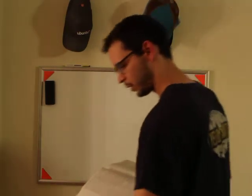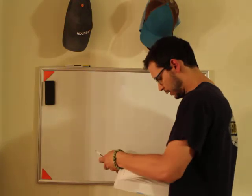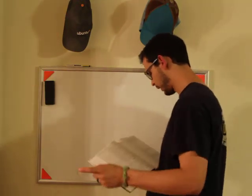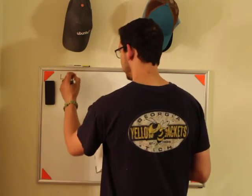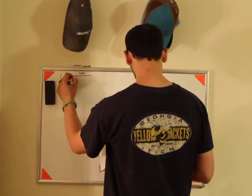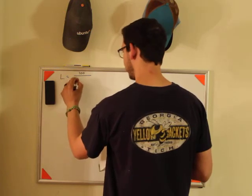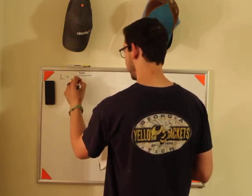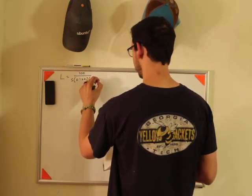Okay, for this video we're going to do problem 6.3b and it says sketch the Bode plot. The transfer function L is 100 over KS times 0.1S plus 1 over 0.5S plus 1.